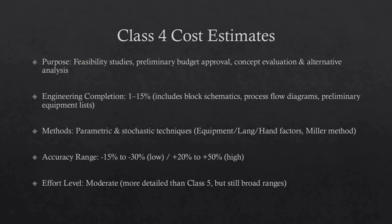Class 4 estimates are generally prepared based on limited information and subsequently have fairly wide accuracy ranges. They are typically used for project screening, determination of feasibility, concept evaluation, and preliminary budget approval. Typically, engineering is from 1% to 15% complete and would comprise at a minimum: plant capacity, block schematics, indicated layout, process flow diagrams for main process systems, and preliminary engineered process and utility equipment lists. Class 4 estimates are prepared for purposes such as detailed strategic planning, business development, and project screening at more developed stages.